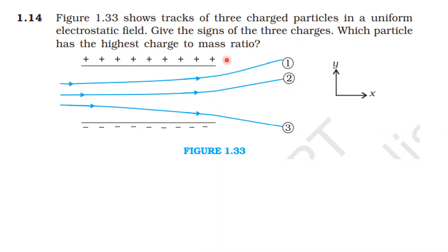In this question, they asked us to find the sign of the charges for the first, second, and third charges, and also the charge-to-mass ratio (specific charge). We assume the positive plate attracts negative charges and the negative plate attracts positive charges. The first and second charges are deflected towards the positive plate, so they possess a negative sign. The third charge is attracted by the negative plate, so it must be positive.